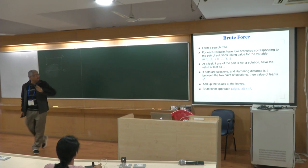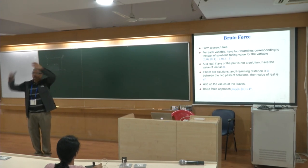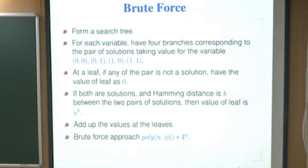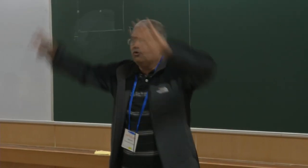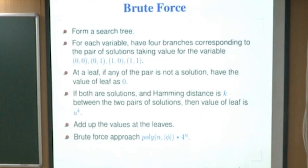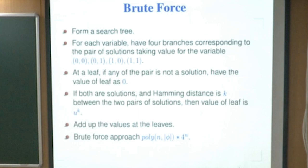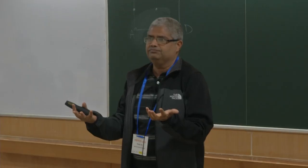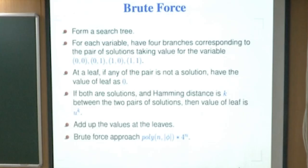Consider the brute force search tree. Starting from the root, for each variable we consider all possibilities for the two assignments: (0,0), (0,1), (1,0), (1,1). At each level there are 4 branches, and with n variables this gives 4^n. At each leaf, if both assignments are solutions, we record u^k where k is the Hamming distance between them; if at least one is not a solution, we put 0. Summing all leaf values gives us the formula we are after.